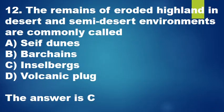Question 12: The remains of eroded highland in desert and semi-desert environments are commonly called: A. Seif dunes, B. Barchans, C. Inselbergs, D. Volcanic plug. The answer is C.